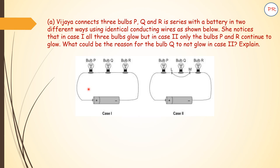In case 1, all bulbs glow P, Q, R. But in case 2, P and R are glowing while Q is not glowing. So this is the reason.